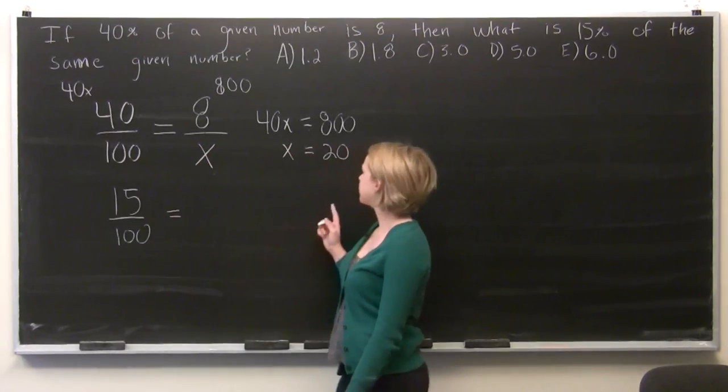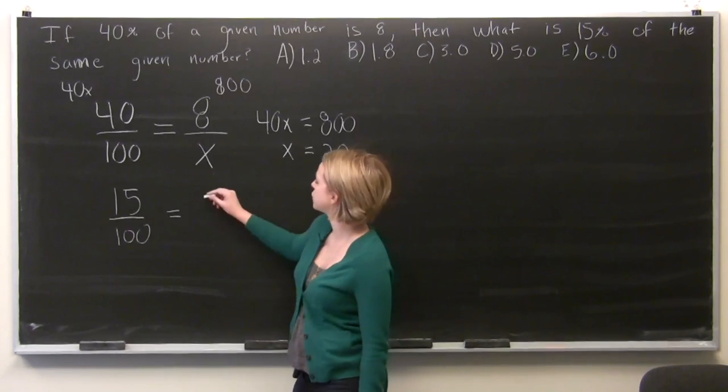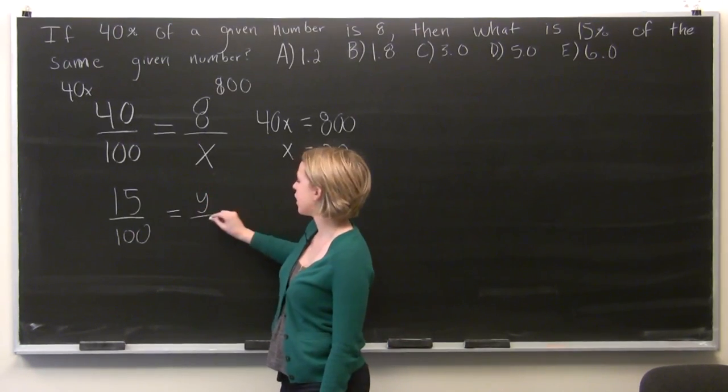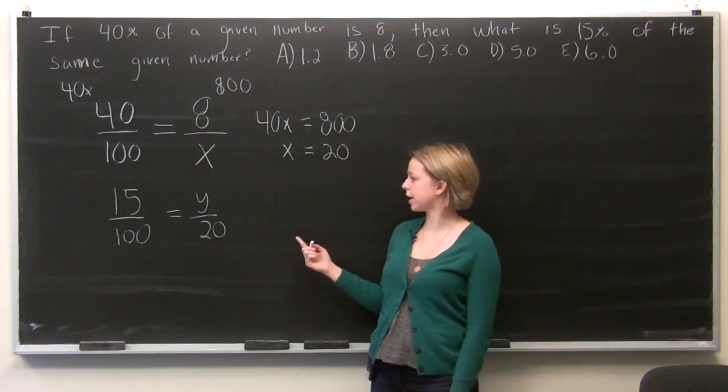15% of our given number 20 is going to be 15 over 100, and set that equal to the number that we're looking for, y, over our given number 20. And we'll cross multiply again.